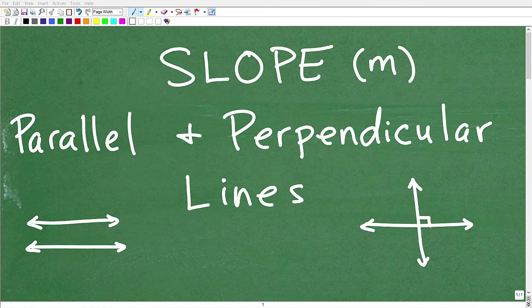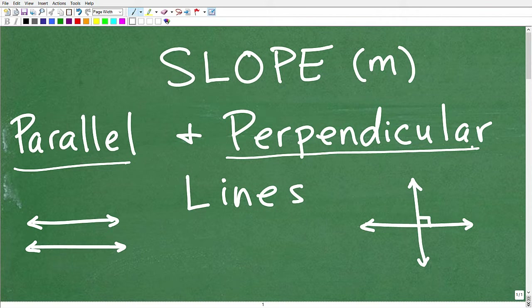Let's talk about the slope of a line as it relates to lines that are parallel to one another and lines that are perpendicular to one another. This is an area that a lot of students, when they're first introduced to it, get confused. The focus of this video is to make sure you don't get confused and get these kinds of problems correct.